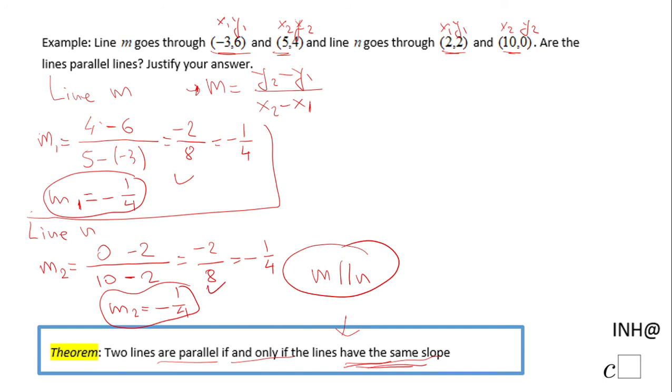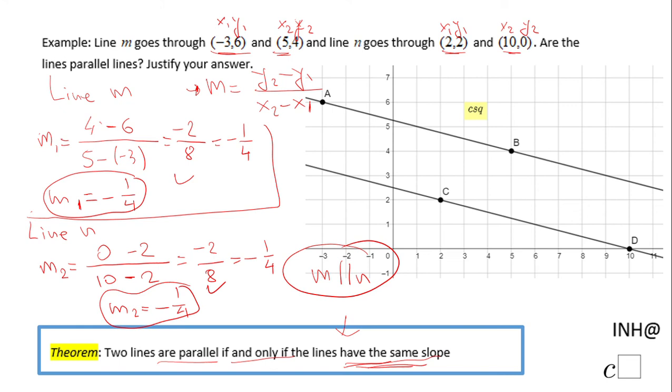You can see the graphical approach here. This is line m, or line AB if you want to call it, and this is line n, or line CD. You notice they are parallel lines because they have the same slope. If you enjoyed this, don't forget to click the like button and come back to C² for more help. Thank you!